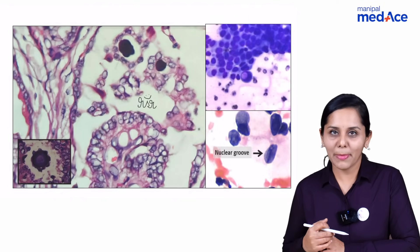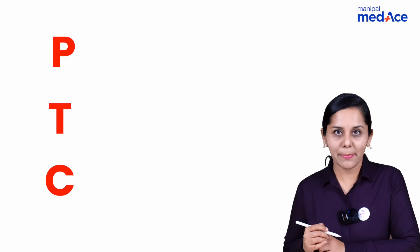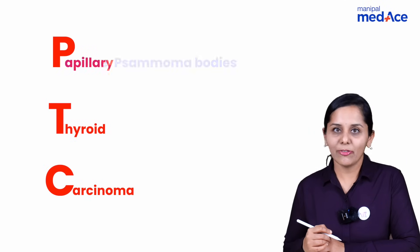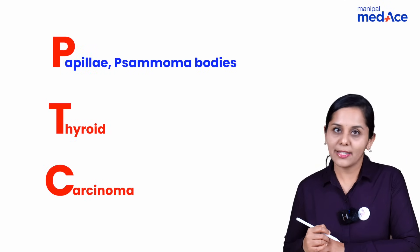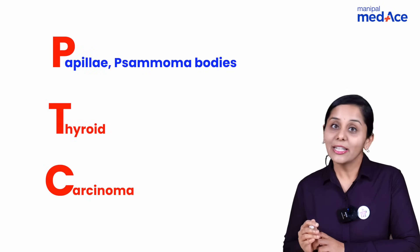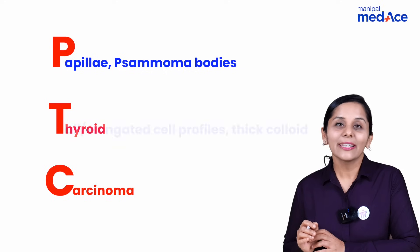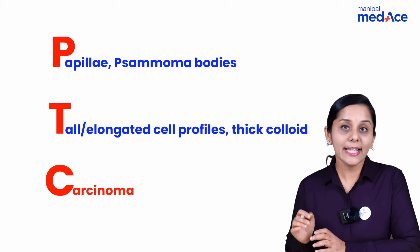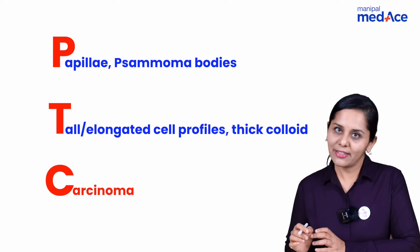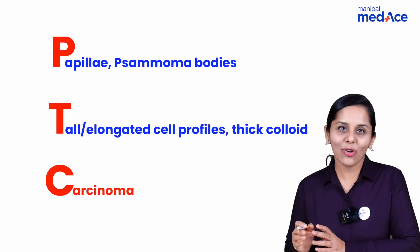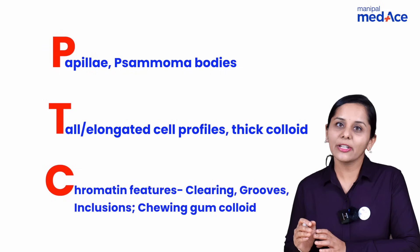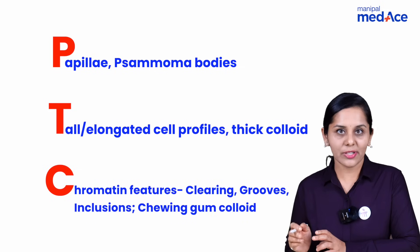So how are you going to remember? Just remember PTC — papillary thyroid carcinoma. P stands for papillae and psammomatous calcification. T stands for thick colloid as well as the elongated cells, which I call tall cells, taller than normal follicular cells.